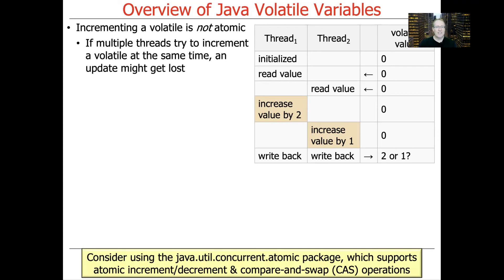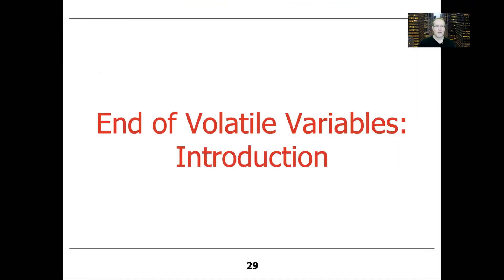If you need guarantees on these kinds of operations, one way to solve the problem is to use the Java Atomics package, like AtomicInteger, AtomicLong, or AtomicBoolean. There are other ways too, such as using synchronized methods, synchronized statements, or various synchronizers like ReentrantLock. That's the end of the overview of volatile. Next, we'll talk about some examples and discuss usage considerations for how to apply volatile correctly in practice.